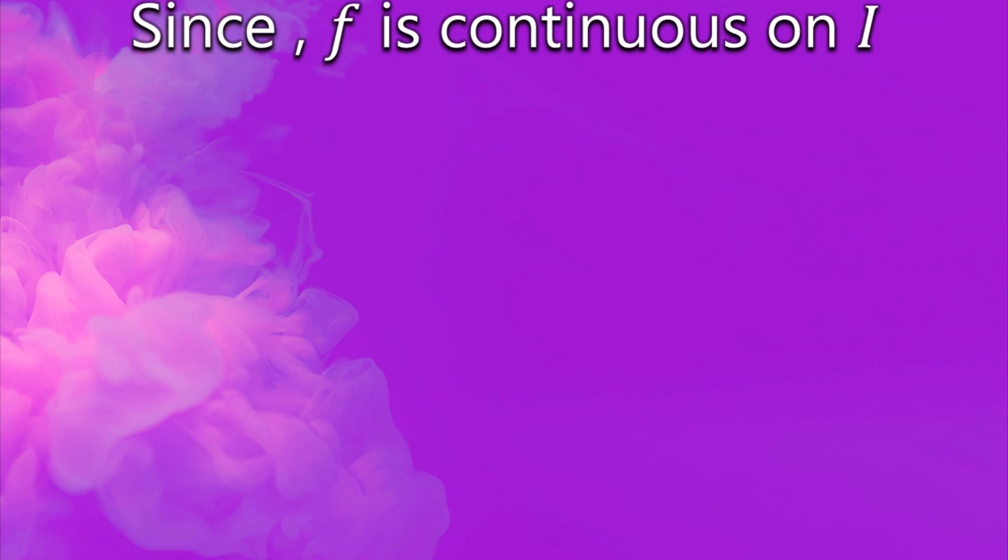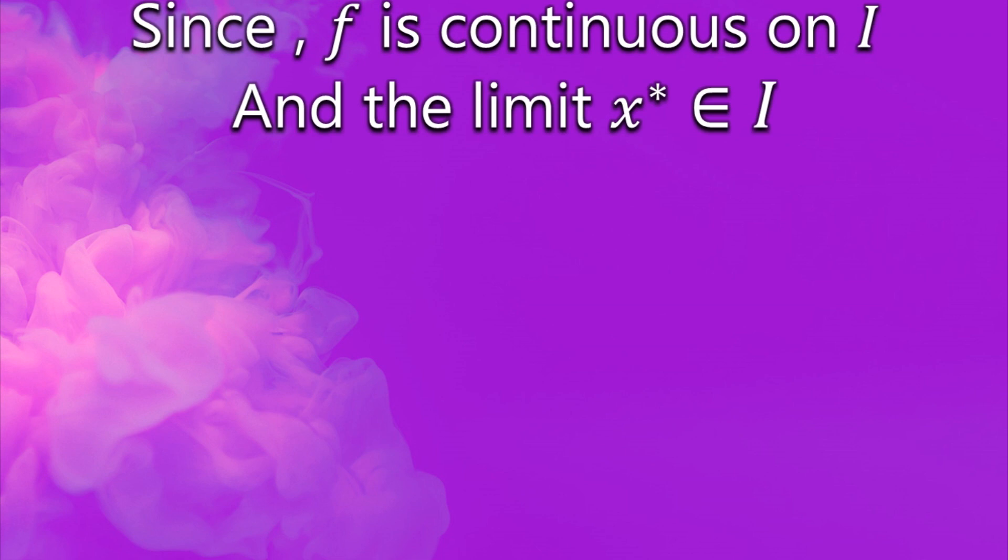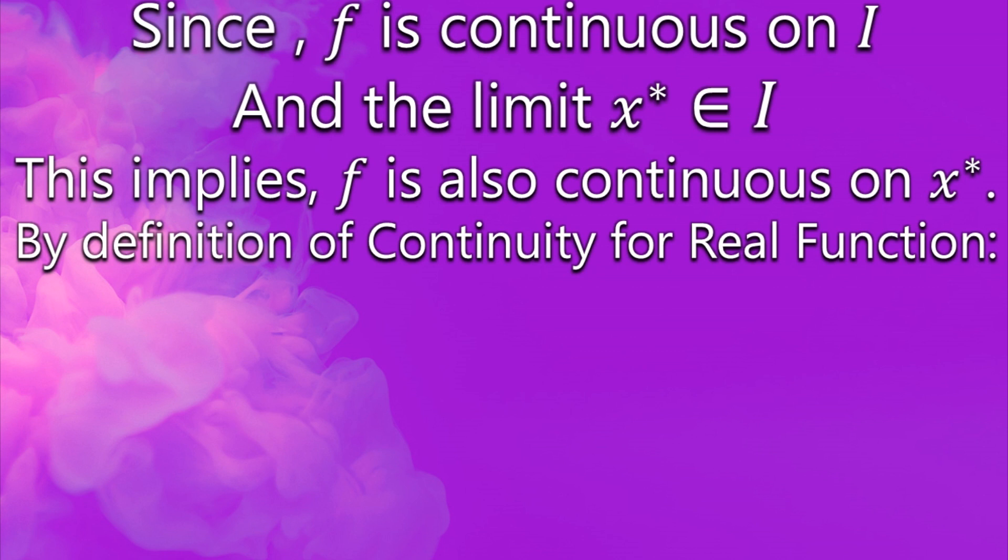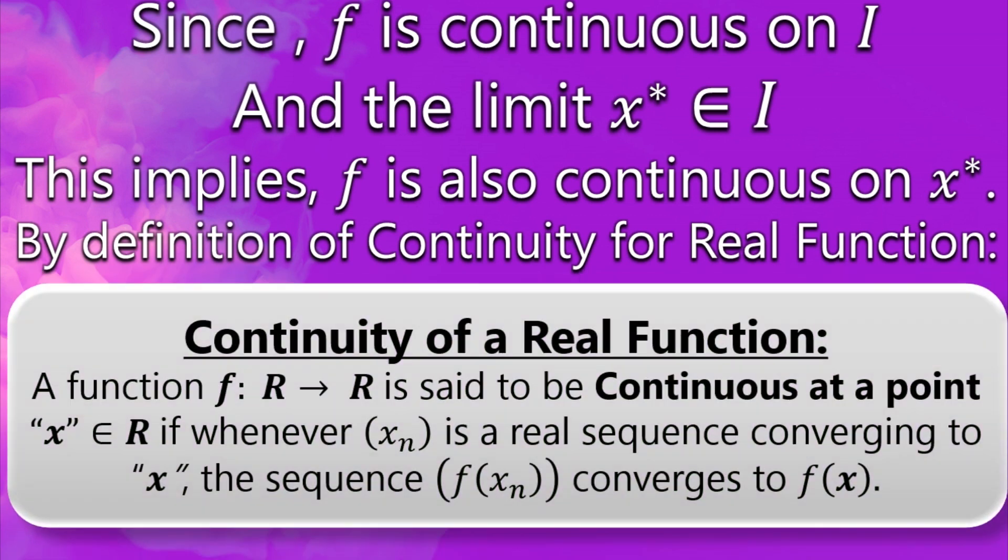As we know that F is a continuous function on I and the limit x* belongs to I, so this means that F is also continuous on x*, because F is continuous on every single element of I.